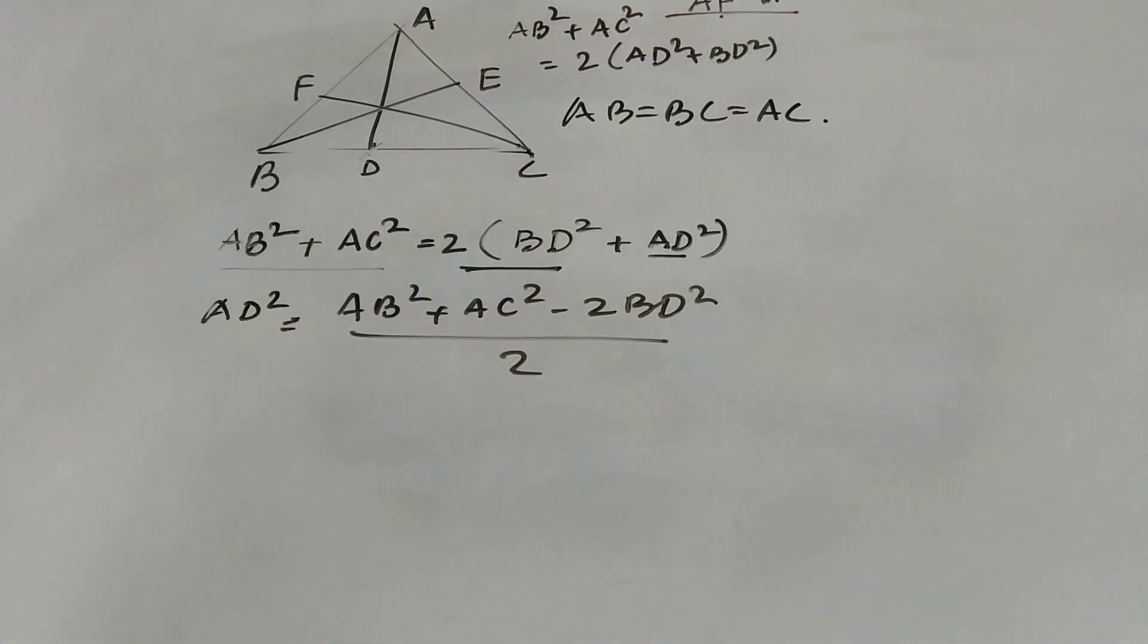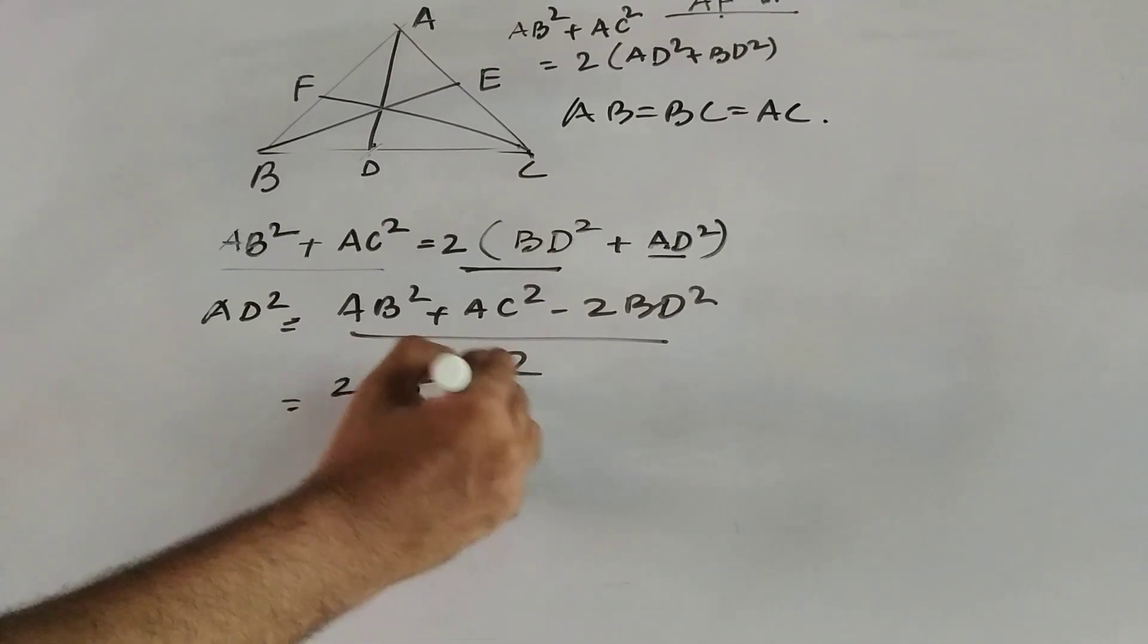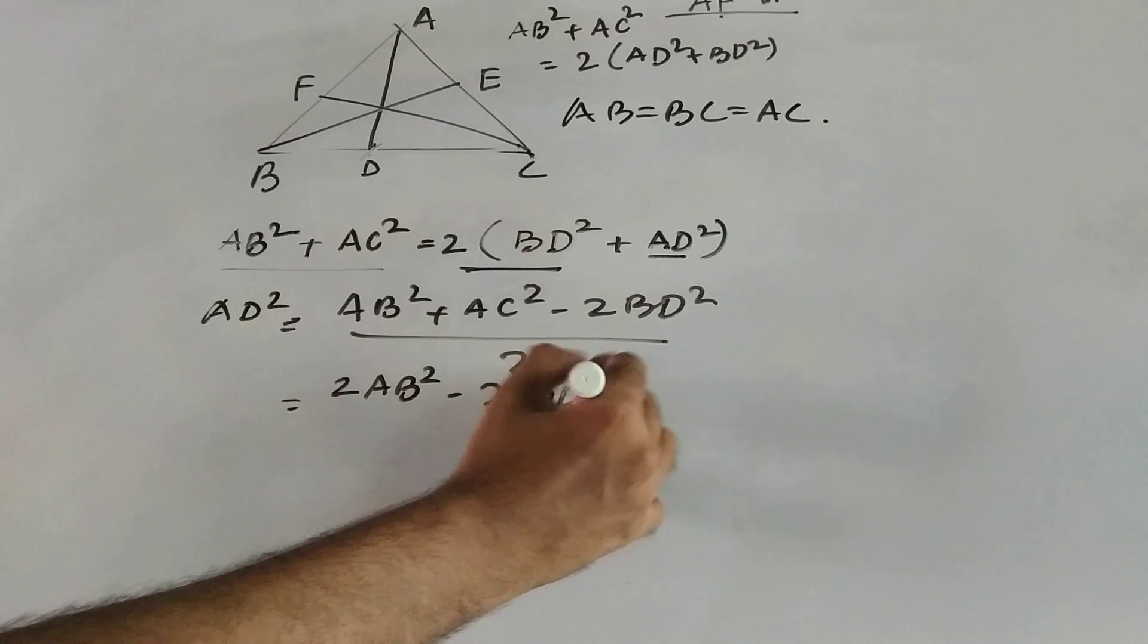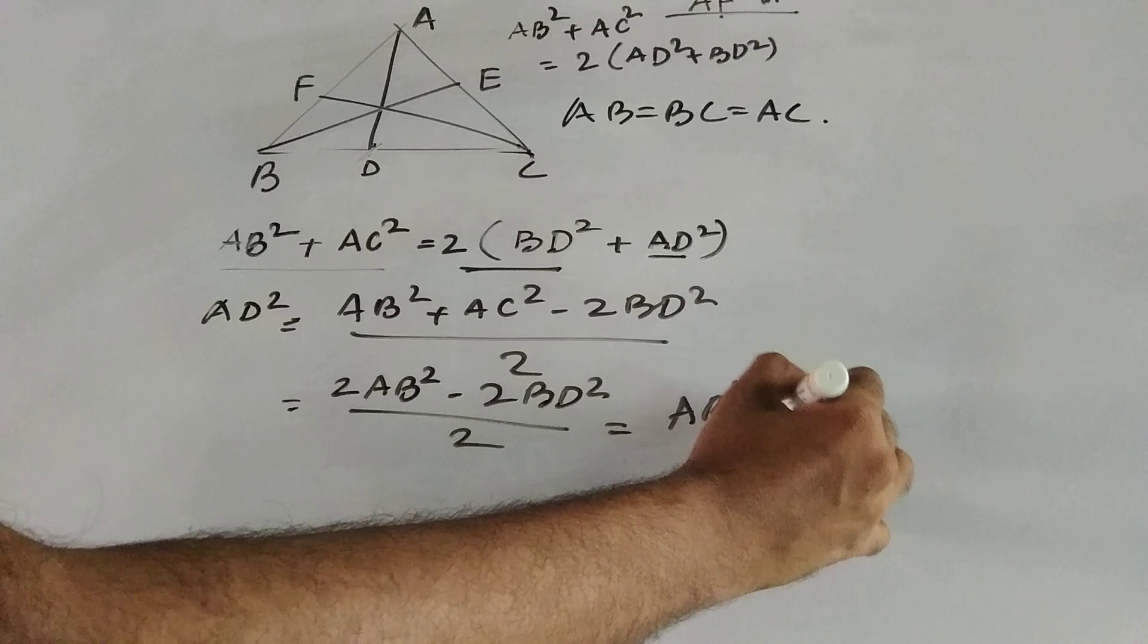Now AB equal to AC, since this is an equilateral triangle, so it can be written as 2 into AB square minus 2 into BD square whole divided by 2, which is same as AB square minus BD square.